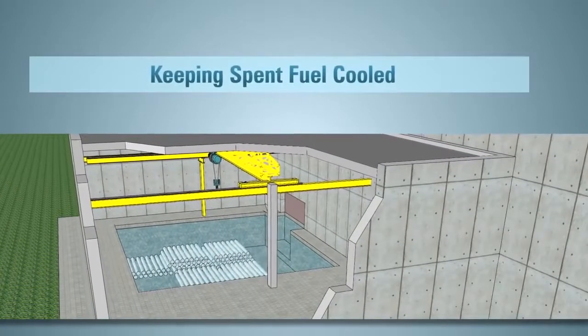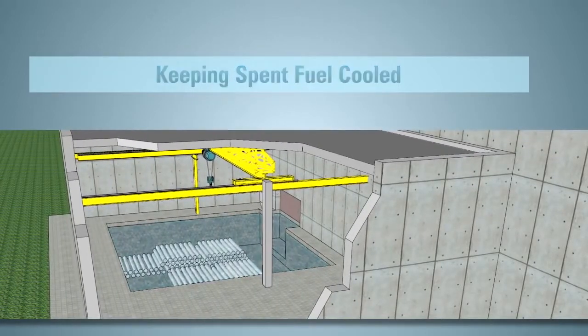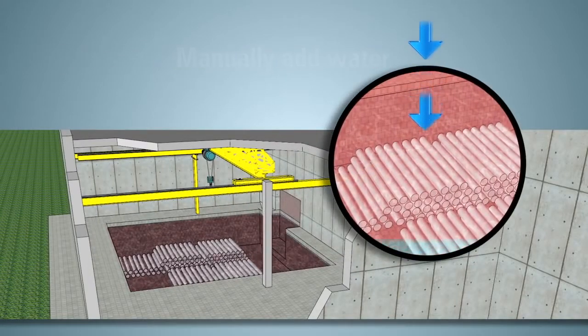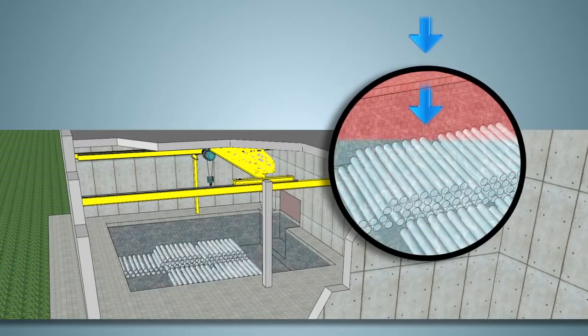In a total station blackout, the large amount of water in the spent fuel pools would slowly heat up. Workers would manually add water as necessary to keep the spent fuel covered by water and cooled.